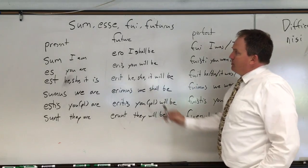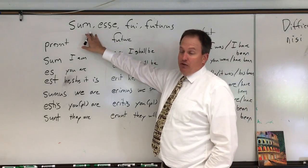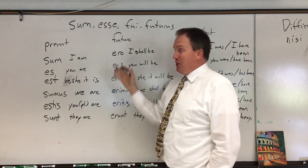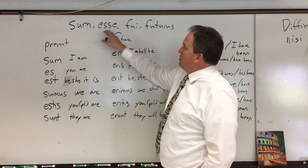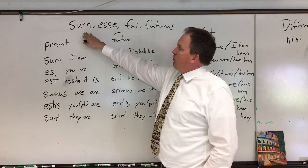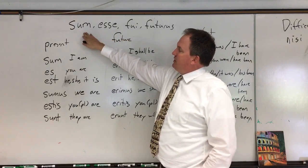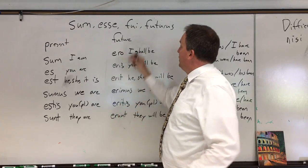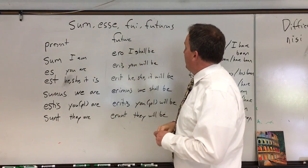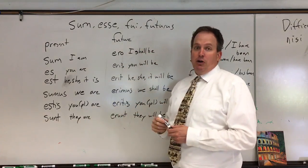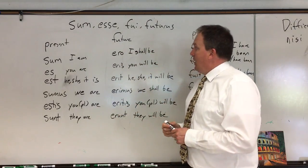Just remember, sum is your regular verb — very common because we use it all the time. Sum, esse, fui, futuri. Sum, of course, is the present tense first principal part: I am. Esse is 'to be.' Fui is 'I was.' And futuri is the future participle.